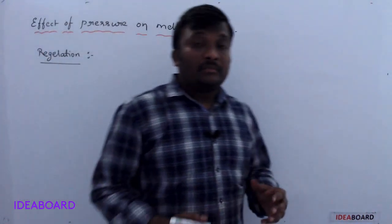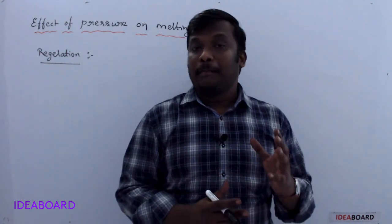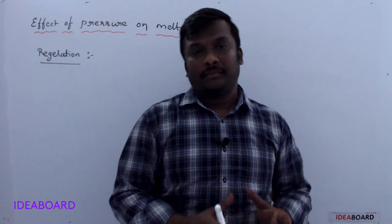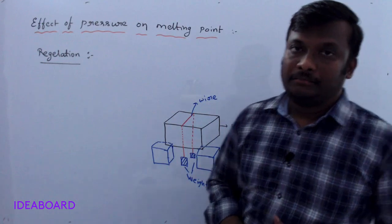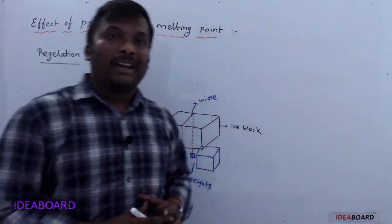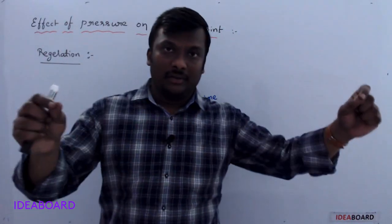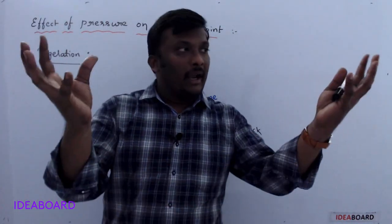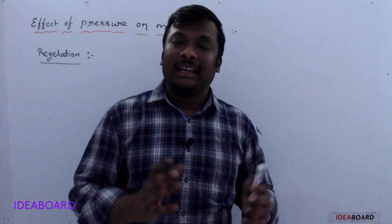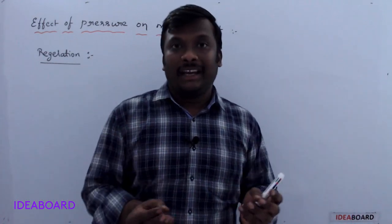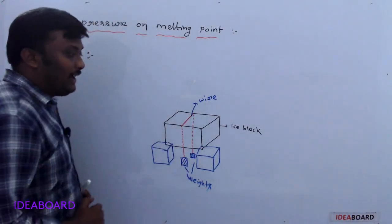Now we discussed that on increasing the pressure, the melting point of ice decreases. Based on that, the phenomenon called regelation exists. To understand regelation, let us take an ice block and a wire. At both ends of the wire, we attach certain weights — nearly 5 kg at each end — and that wire is slung over the ice block.